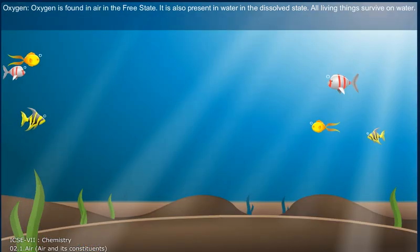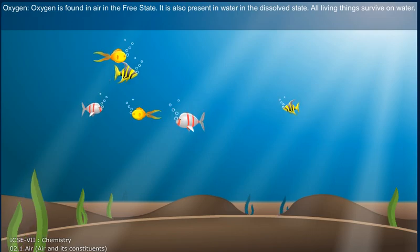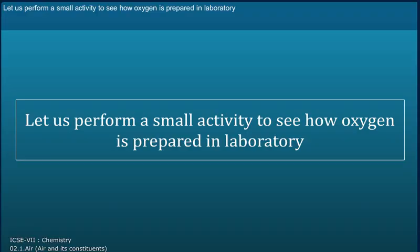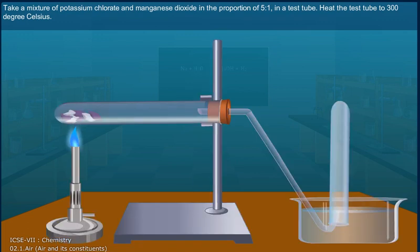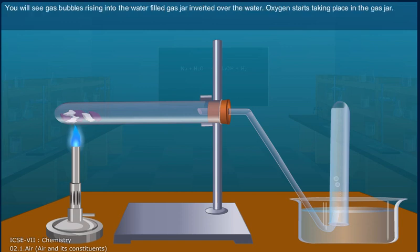Let us perform a small activity to see how oxygen is prepared in the laboratory. Take a mixture of potassium chlorate and manganese dioxide in the proportion of 5:1 in a test tube. Now heat the test tube to 300 degrees Celsius. You will see gas bubbles rising into the water-filled gas jar inverted over the water.